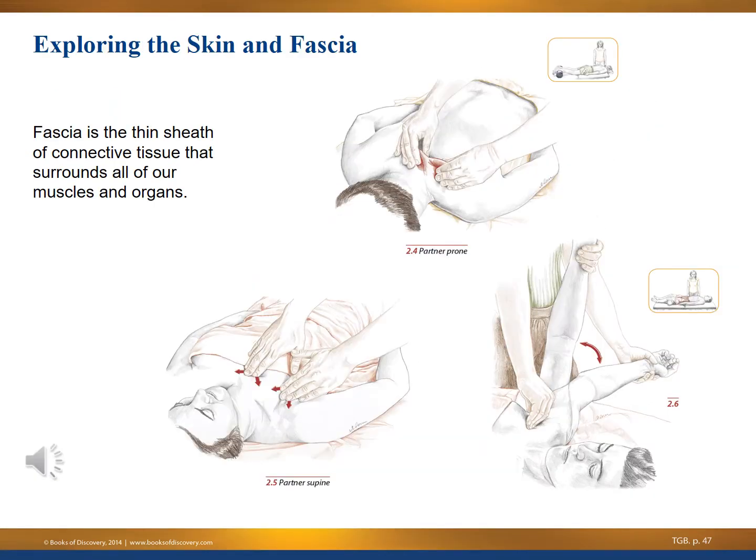On the upper body we can explore the skin and the fascia. As a body worker, fascia is the thin sheath of connective tissue that surrounds all of our muscles and organs. You can see some images here of how we explore restrictions within that fascia. Fascia and skin are great assessment tools.